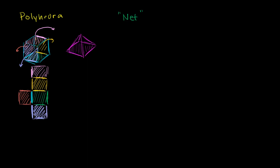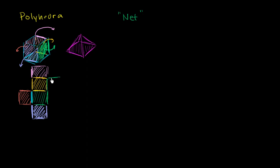Then we have one face of the cube left — this side right over here. We could fold it out along this edge and draw the surface right over there. Or if we want to do something interesting, we could fold it out along the edge it shares with the yellow backside. So you see that there are many, many ways to construct a net — a net that when you fold it all back up will turn into this polyhedron, in this case a cube.